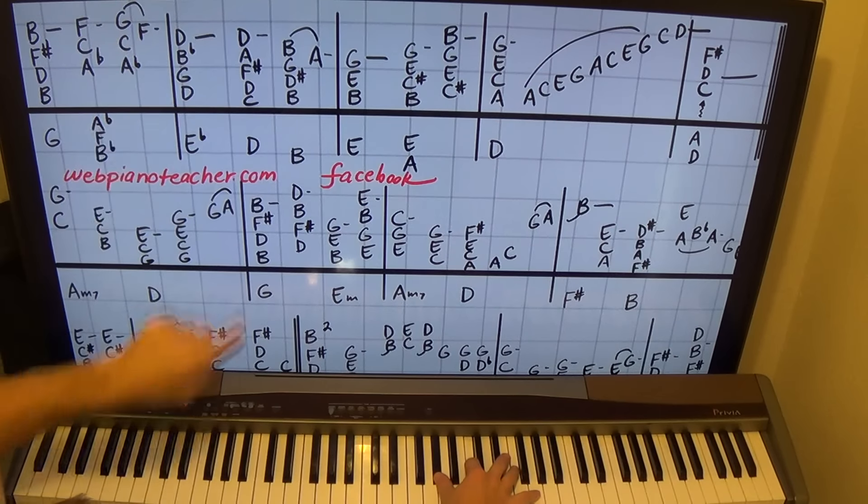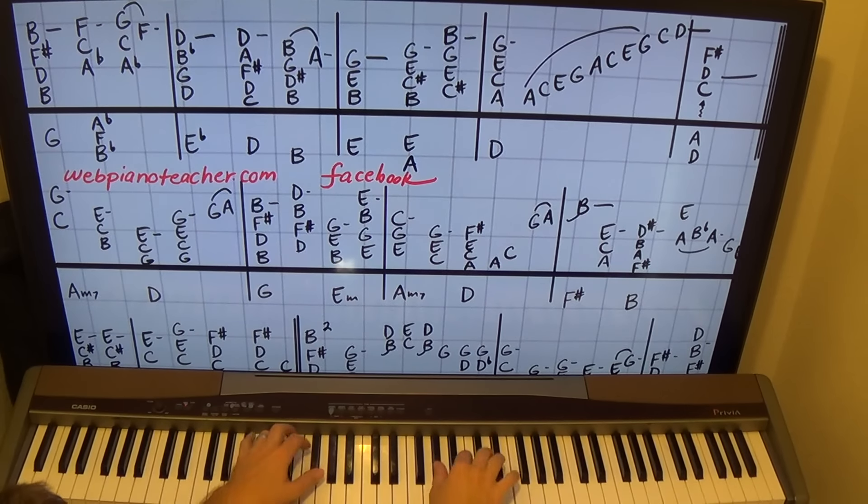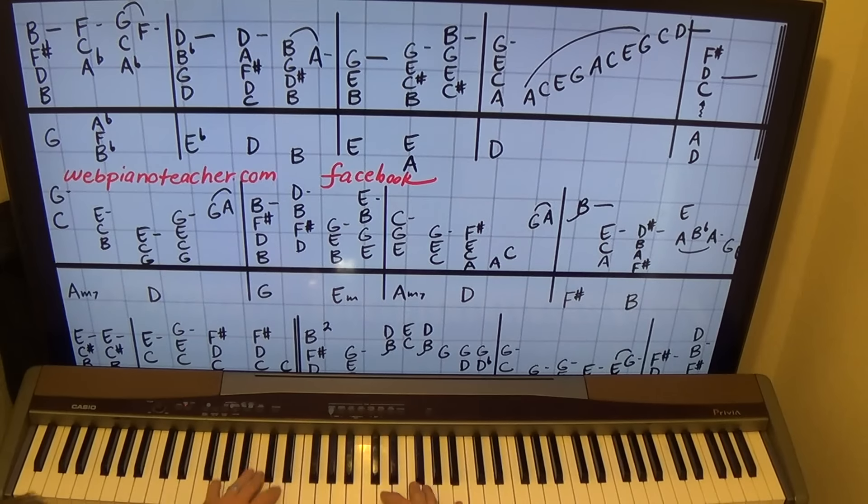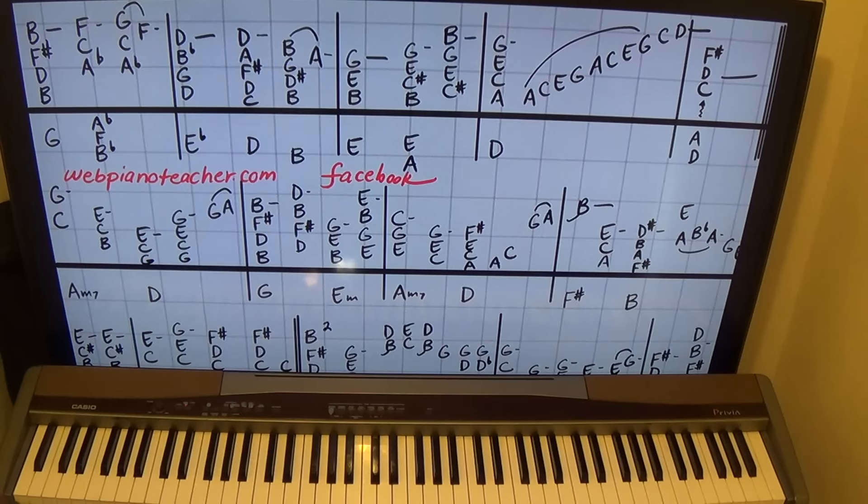We'll just move that 5th finger up a little bit higher to get the G. And then play the F with our 4th finger. So the first measure is 1, 2, 3... I'm sorry. Let me try again. 1, 2, 3, 4, and... Feel free to roll any of these chords if you want to do that.